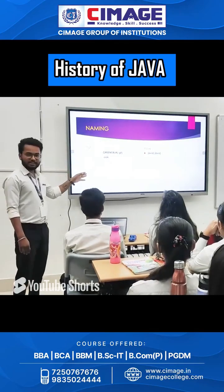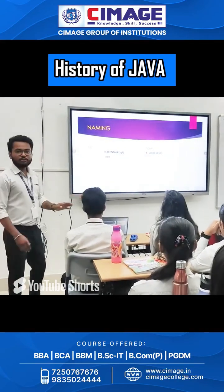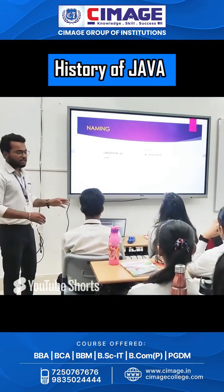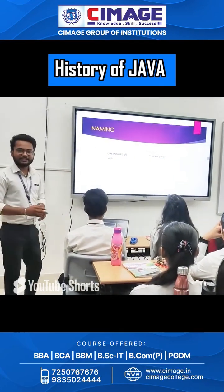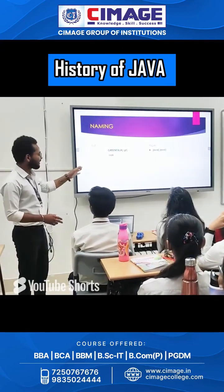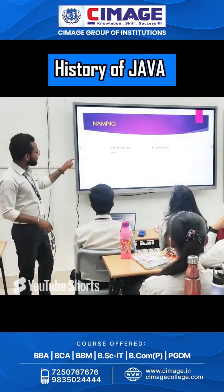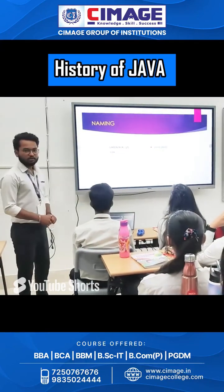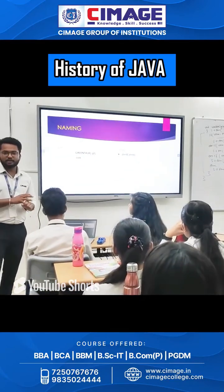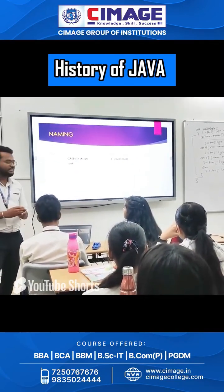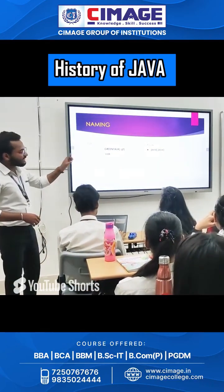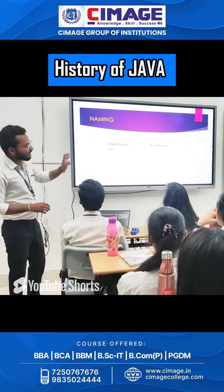So first, Java was named as Greentop, because its team was the Green Team. The extension of that program was .gp. After that they renamed it, because Greentop is a symbol of strength and the national tree of many countries such as USA, France, and many more. After that, in 1995, they named it Java.